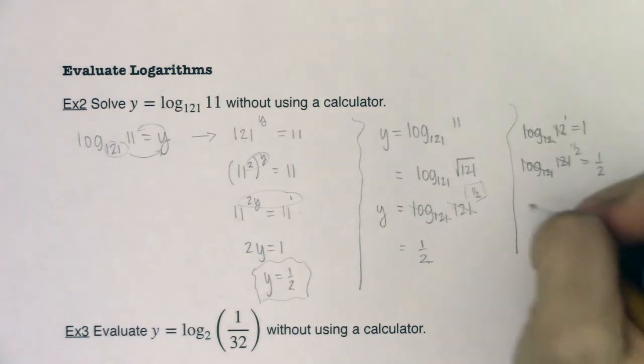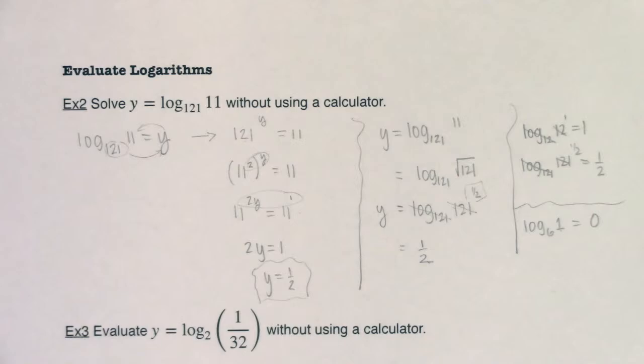And the other special property that we saw in example 1 was we had log base 6 of 1, and when you have 1 as your argument, your exponent is 0.